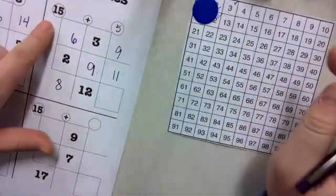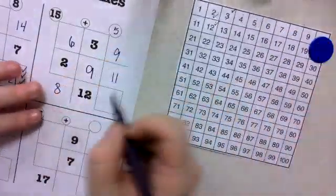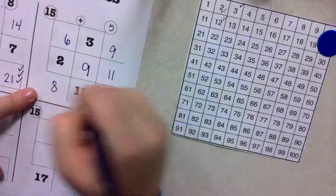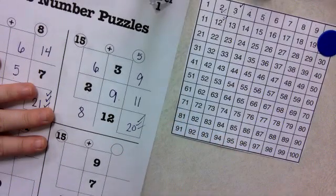And then, here, 15 plus 5, I'm at 15. 1, 2, 3, 4, 5, I'm at 20, and so on. And we're still going to do our check. 8 plus 12 is 20, 9 plus 11 is 20. That's what I'll be working on this week.